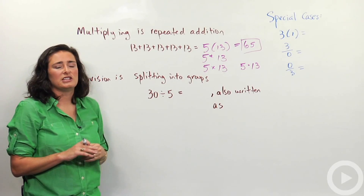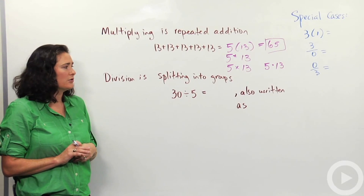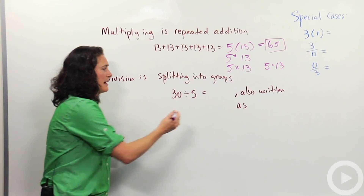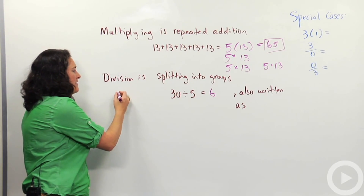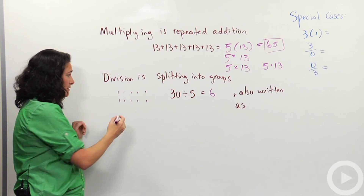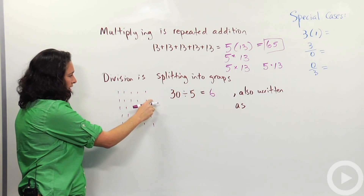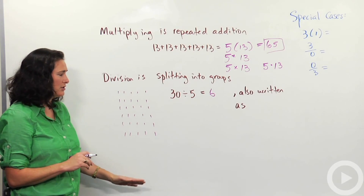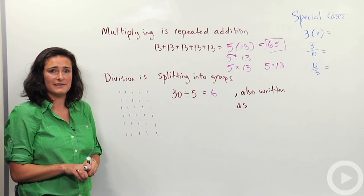Let's talk about division. Division is the opposite of multiplication — it's splitting something into groups. I've written 30 divided by 5 on the board. You probably know that's 6, but let's talk about why. 30 divided by 5 represents taking 30 items and splitting them into 5 different groups. I'm putting 30 dots on the board here — counting: 5, 10, 15, 20, 25, 30. Here are 30 dots, and this tells me to split them into 5 even groups. They have to be the same size.